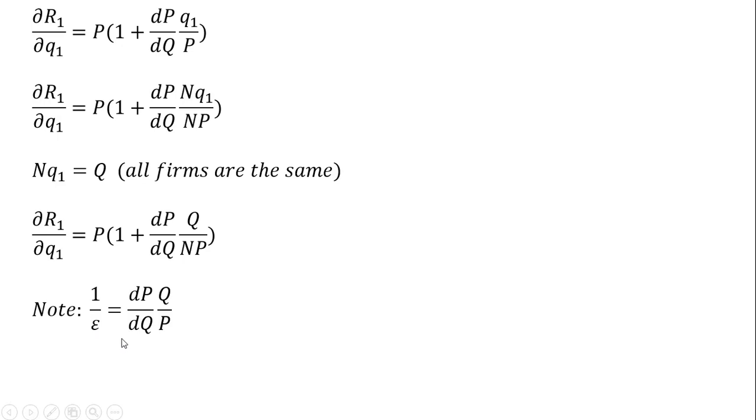Next, recognize that 1 over the price elasticity of demand is given by (dP/dQ)(Q/P) = 1/ε, which looks almost exactly like what we have in parentheses. We're going to make a substitution, and the only thing I have to add is the N. So we get ∂R₁/∂q₁ = P(1 + 1/(Nε)). This is an expression for marginal revenue.